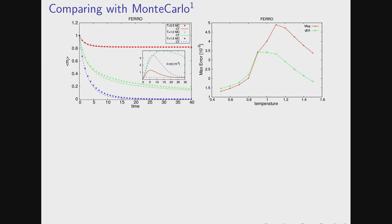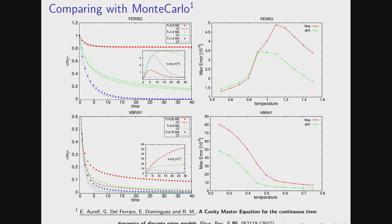We repeat the same experiment using the Viana-Bray model, which is essentially the same network but with plus or minus one interactions on the links instead of ferromagnetic interactions. The model is much more complex. Again, we run the same dynamics: at high temperature you find very good results for the error, but as soon as you enter the glassy phase, everything breaks down — but nothing works in the glassy phase if you want to study dynamics.